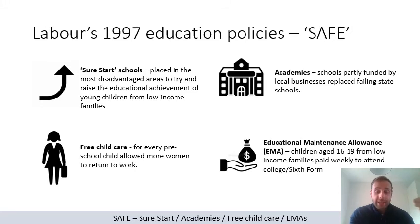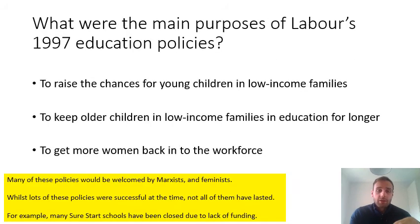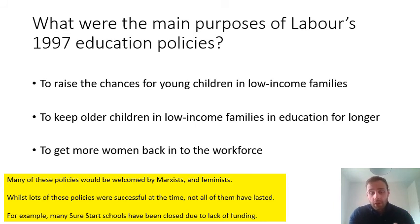So those are the four SAFE policies: Sure Start, Academies, Free Childcare, and EMAs — covering all age groups from preschool to post-16. The purposes are clear: to raise educational chances for children from low-income families, keep them in education longer, and get more women back into the workforce. These policies would be welcomed by Marxists and feminists who value the increased emphasis on women and the working class.